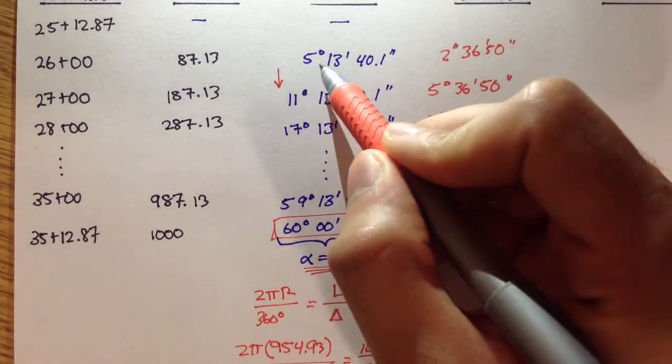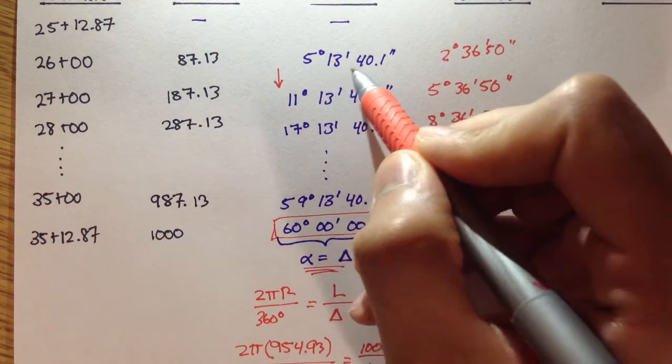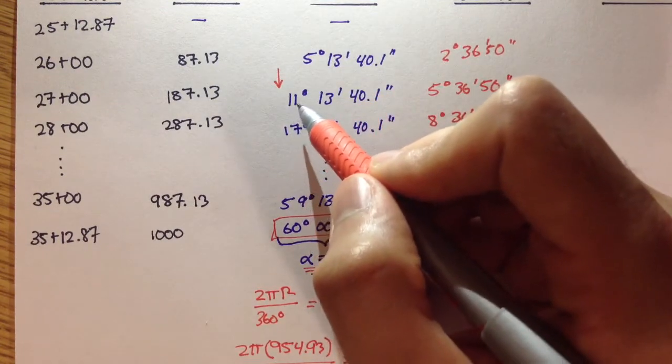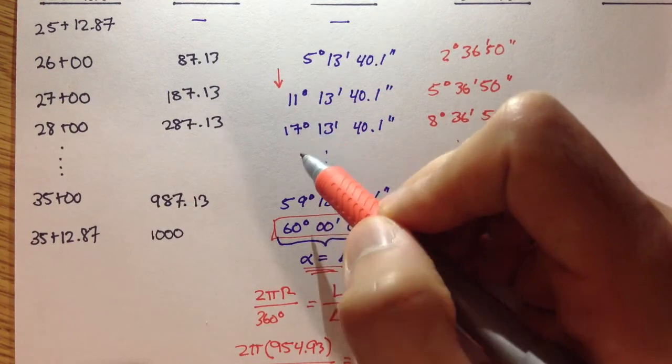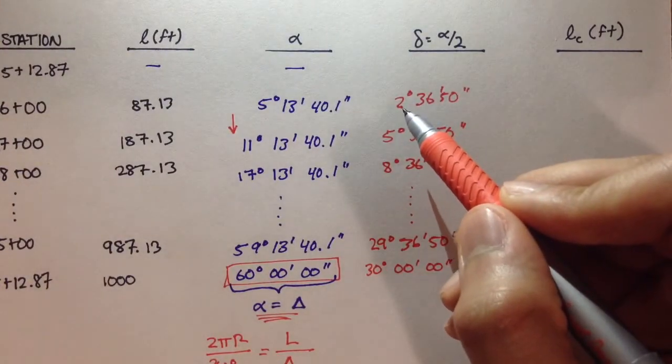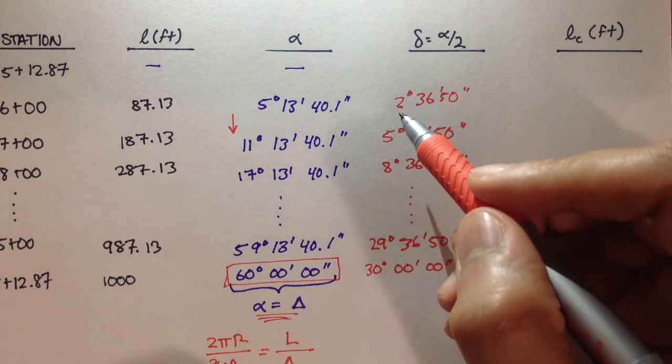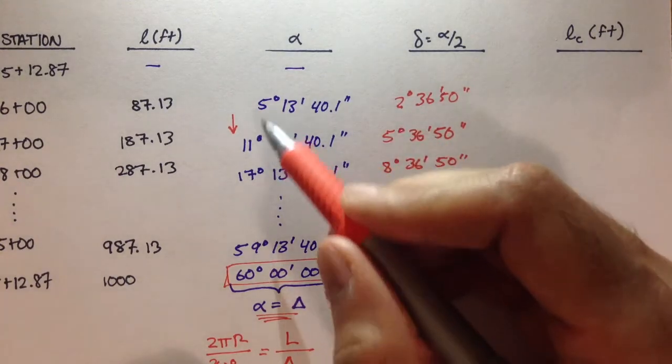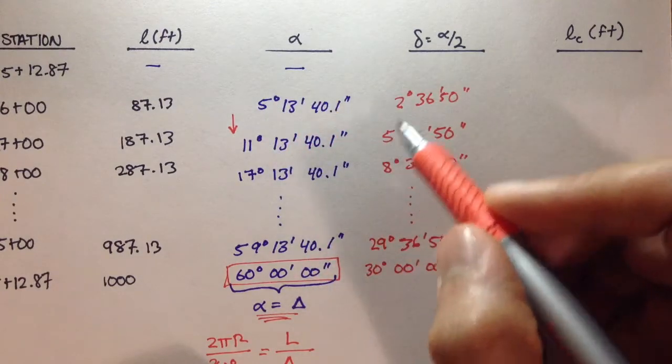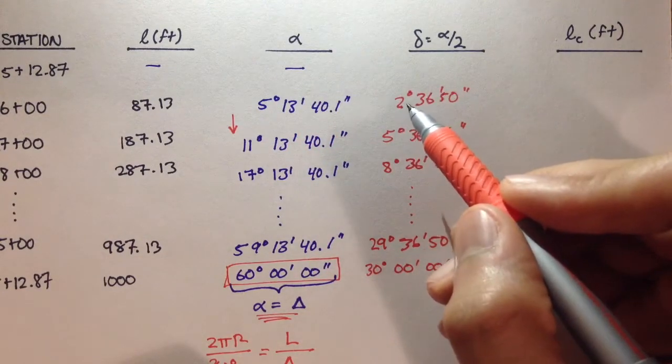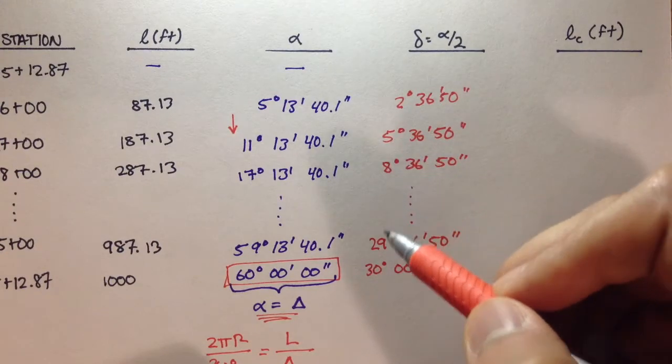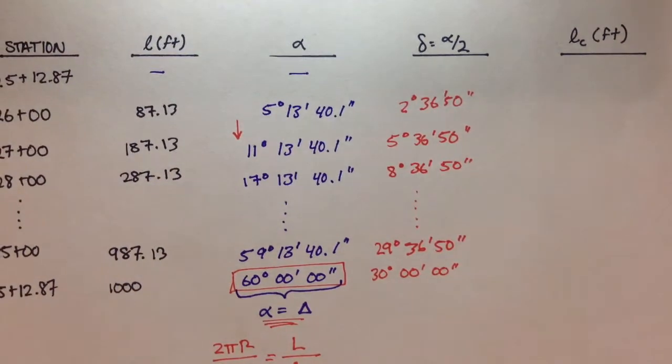So, you have 5 degrees, 13 minutes, 40.1 seconds. You add to that 6 degrees, you get 11. You add 6 to 11, you get 17, and so on and so forth. And here, you'll actually notice that this increases by 3 degrees, or half of the degrees that alpha is increasing by. So, you get 2, and you add to that 3, you get 5, plus 3 is 8, and so on and so forth. I don't know, I found that pretty cool.